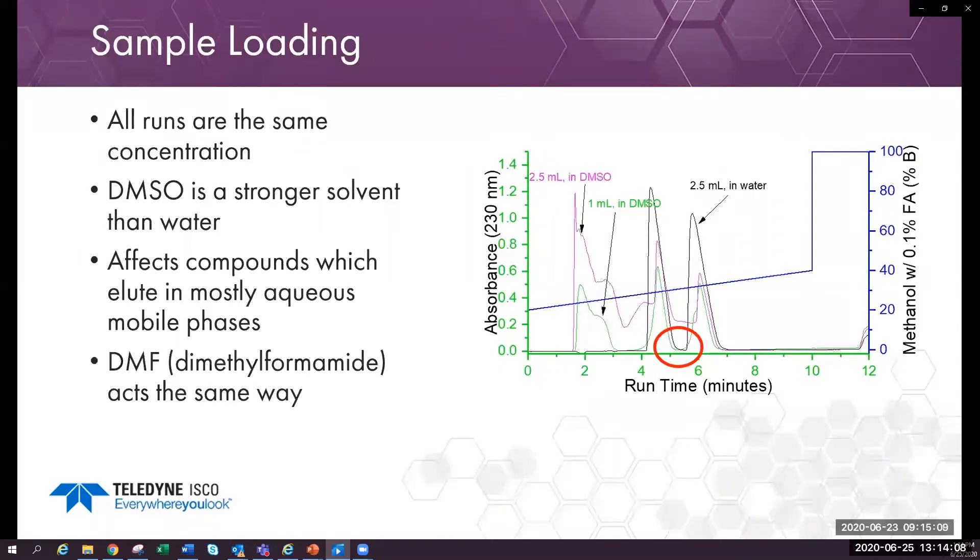Generally, if the sample can elute in 20% or less organic solvent, it is likely to be water-soluble. Alternatively, make the sample as concentrated as possible to minimize the volume of DMSO or DMF used. We also see the same sort of effect if the sample is dissolved in the B solvent, such as methanol or acetonitrile.